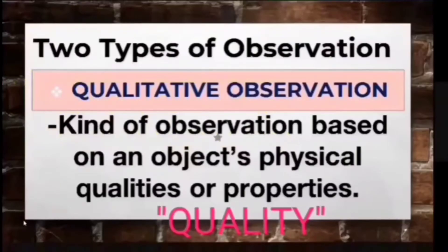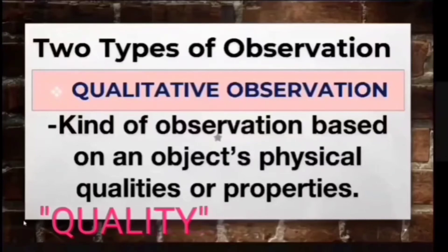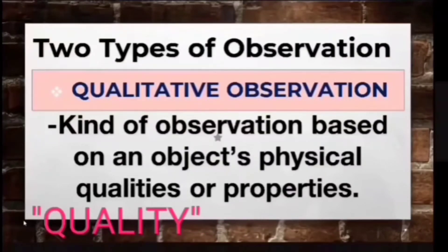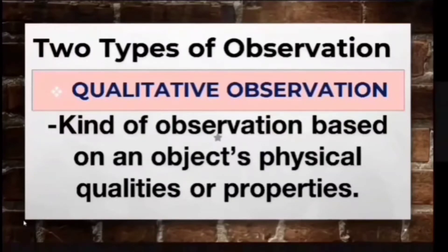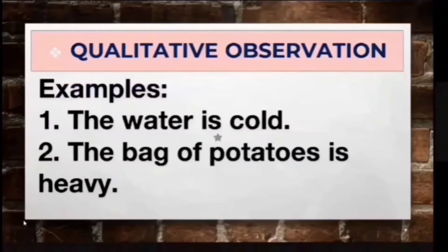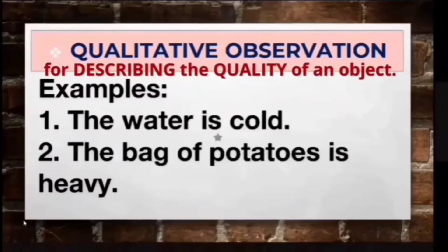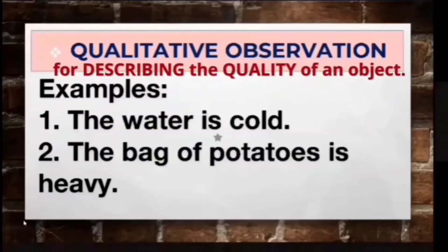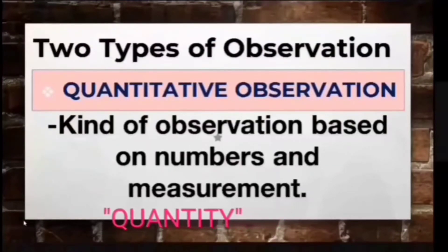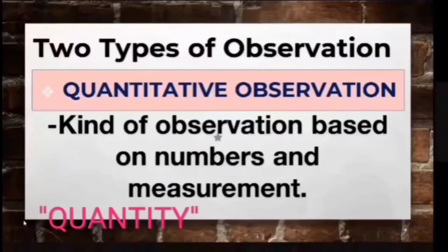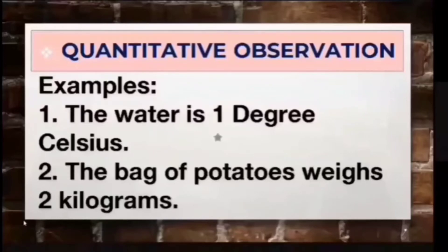As the name suggests, qualitative — meaning pertaining to quality — is the kind of observation where a person observes a certain thing based on its physical qualities or properties. This observation uses all five senses: sight, smell, hearing, touch, and taste. On the other hand, quantitative observation — pertaining to quantity — is the kind of observation where a person observes a certain thing based on its number and measurements.